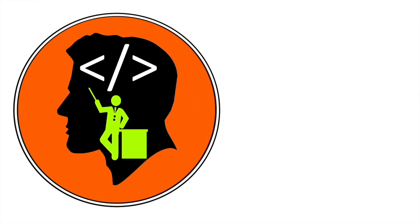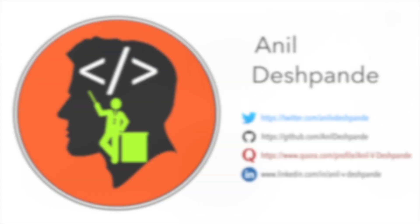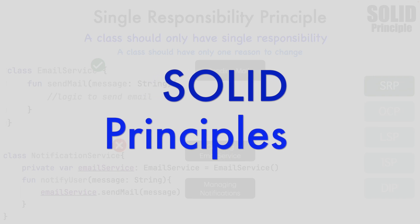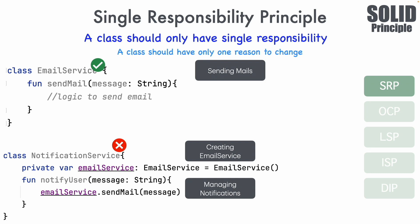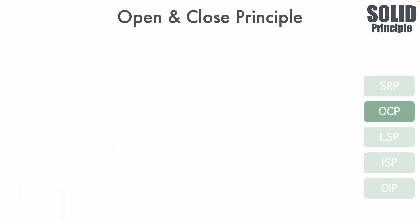Hi folks, co-tutor here and my name is Anil Deshpande. Welcome to the second video on SOLID principles. In the previous video we got introduced to the SOLID principle concept and quickly went through the very first principle, SRP — Single Responsibility Principle. We saw how code that violates SRP looks like. Now it is time to continue the journey, and the next principle is OCP — the Open/Closed Principle.